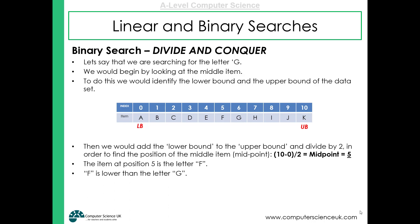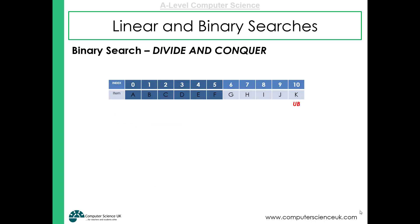In the alphabet, F comes before G. So the binary search algorithm knows that the letter G is in the top half of the array, allowing it to half the size of the array it will look at in the next cycle. Everything before F in the data set can be ignored. To start the next cycle, we update the lower bound to one more than the previous midpoint index. The midpoint was 5, so we add 1 to get 6 — that becomes our new lower bound.